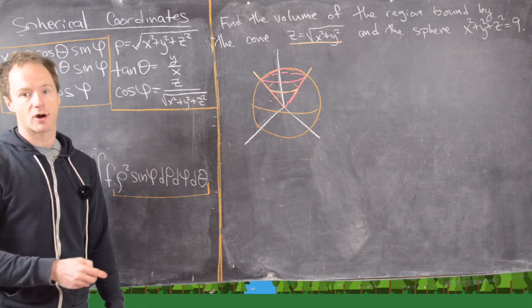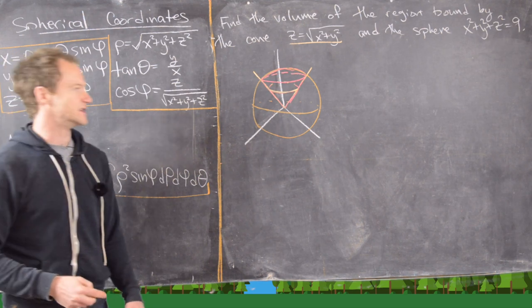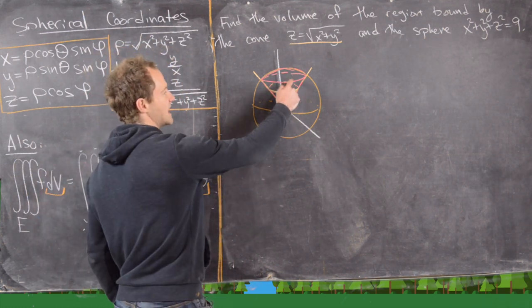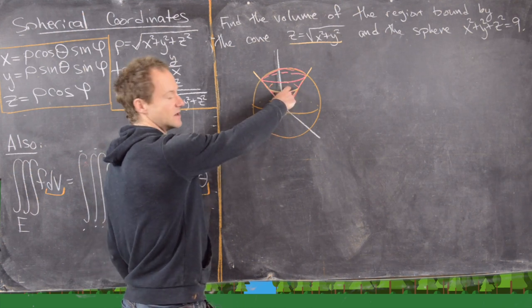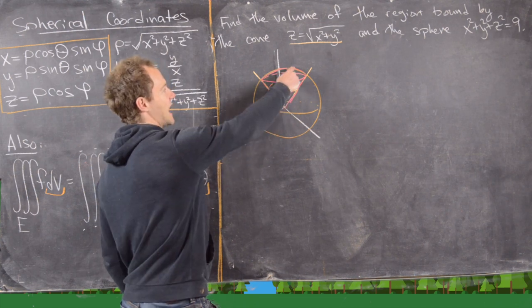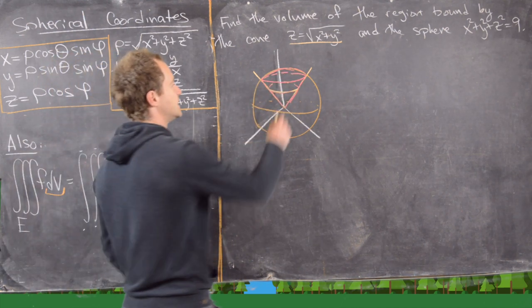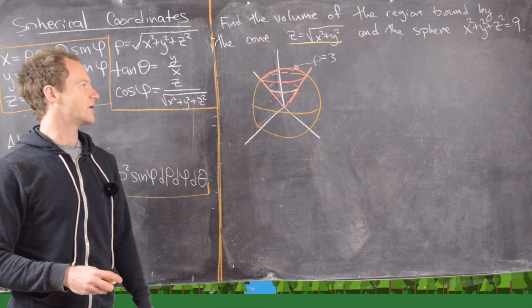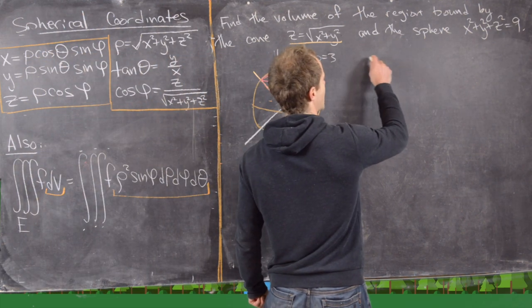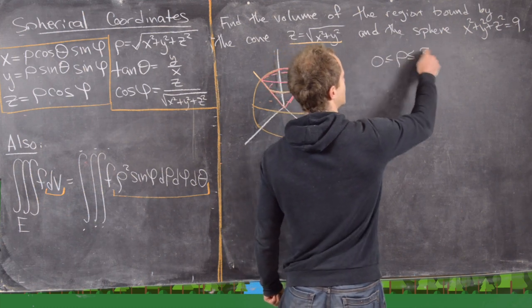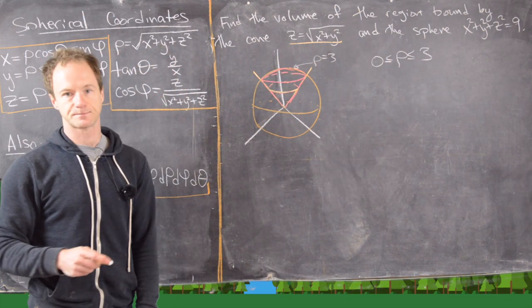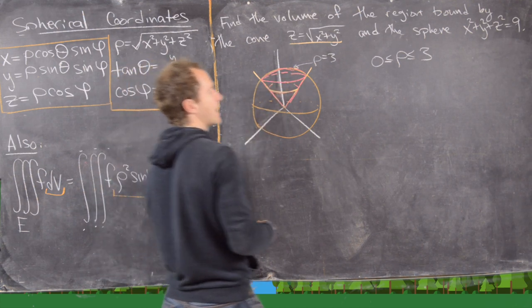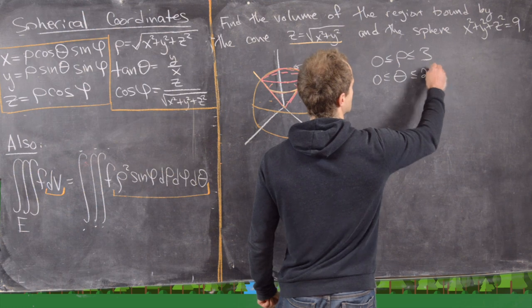Now let's figure out what our ρ, θ, and φ values need to be. If we're inside this solid region, we are between 0 and 3 units from the origin, because the sphere is given by the equation ρ = 3. So my ρ values run between 0 and 3. Since this is the entire ice cream cone all the way around, my θ values run from 0 to 2π.